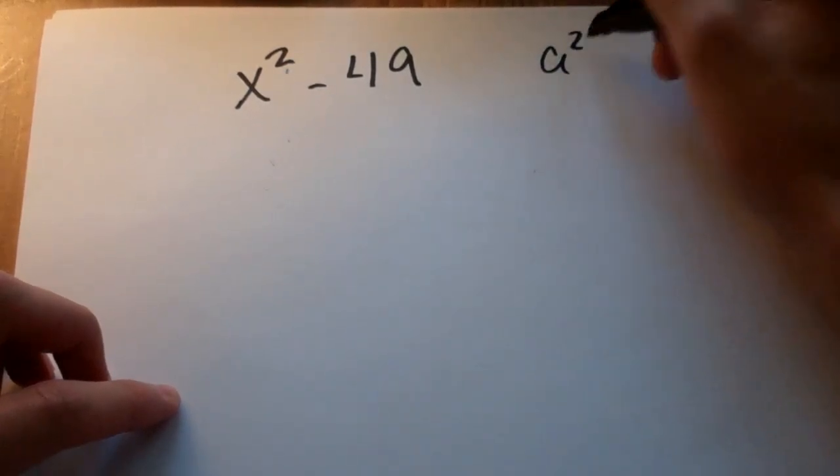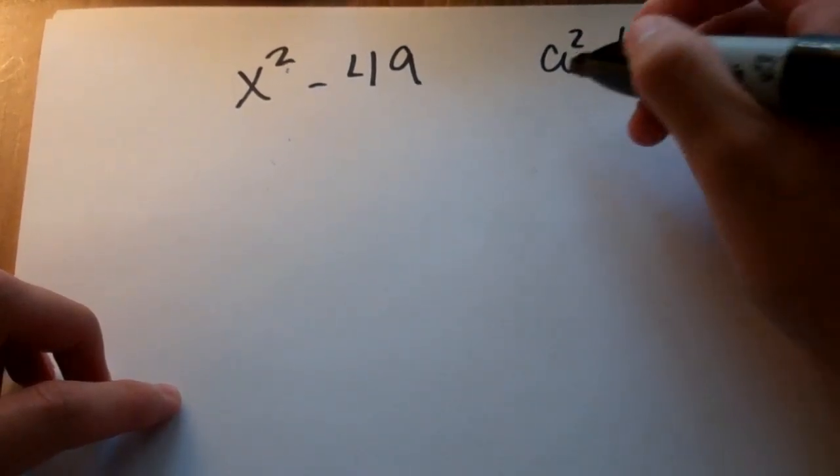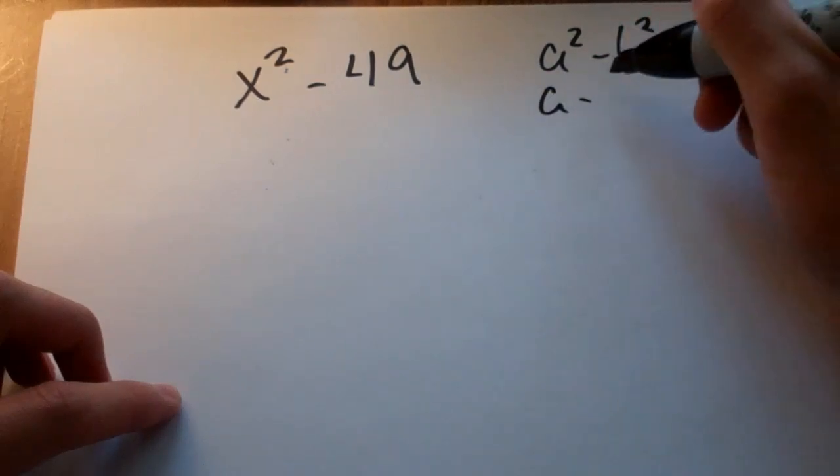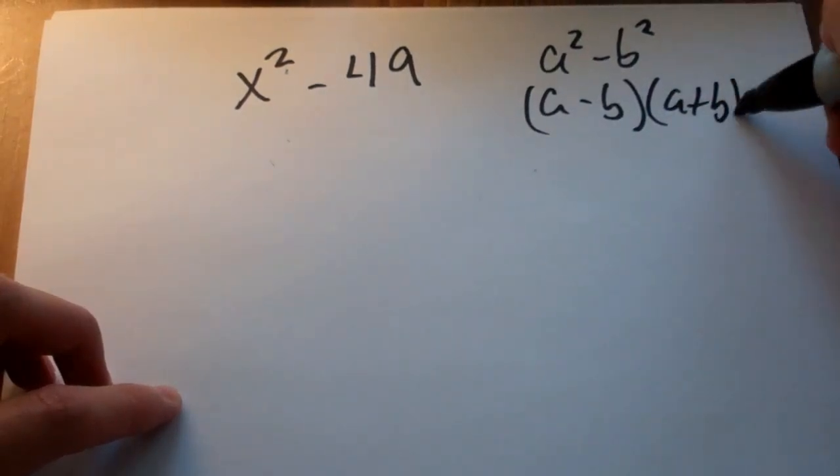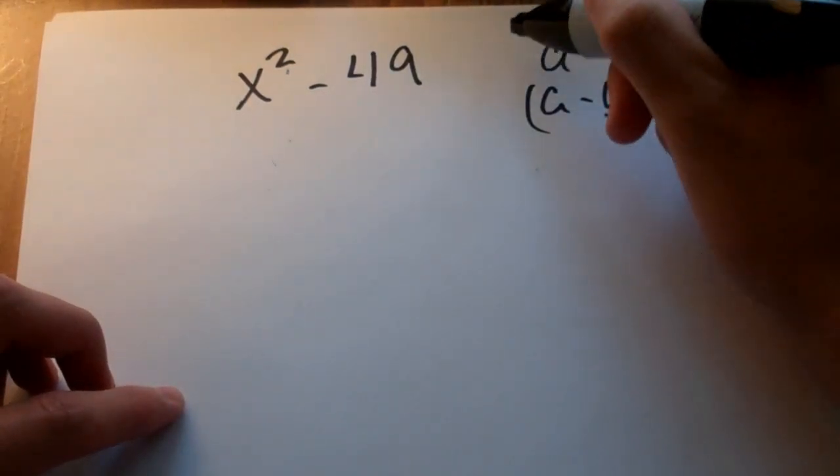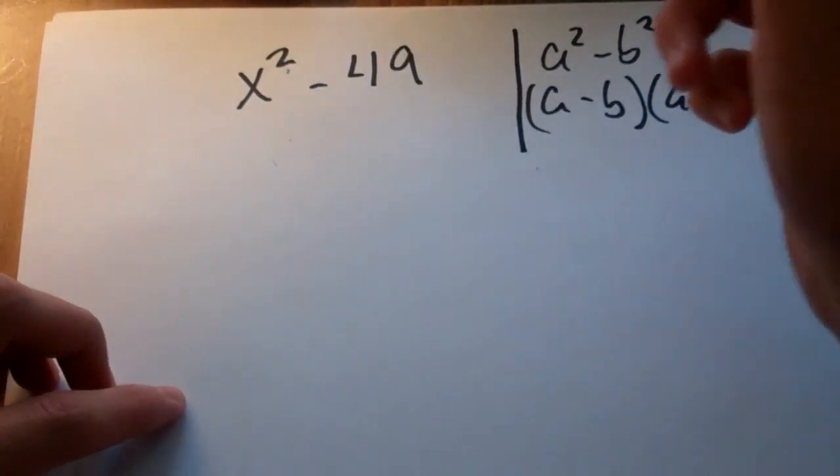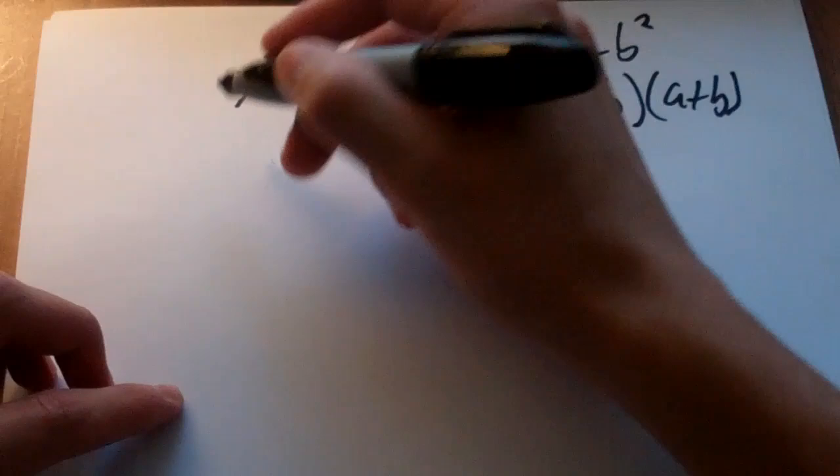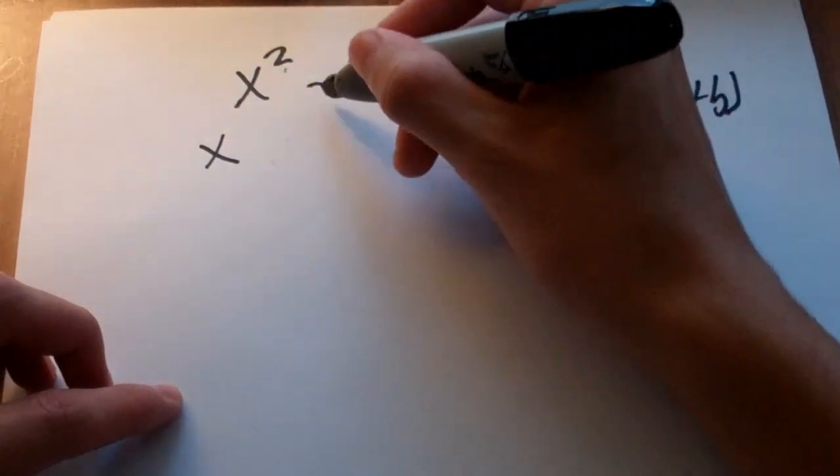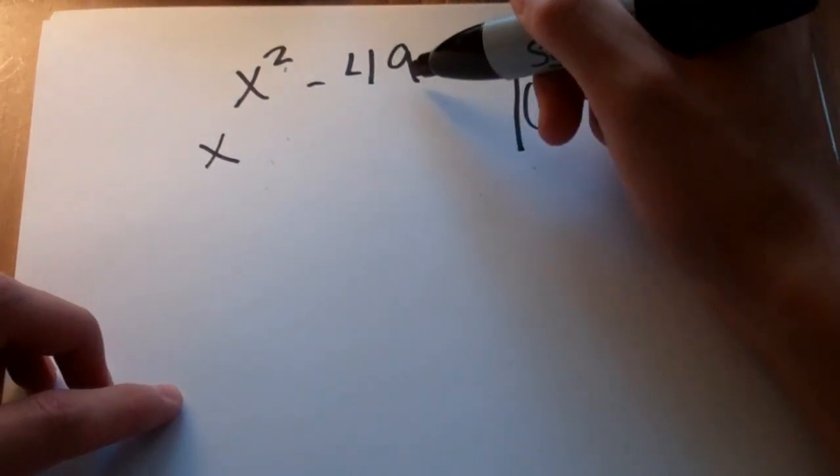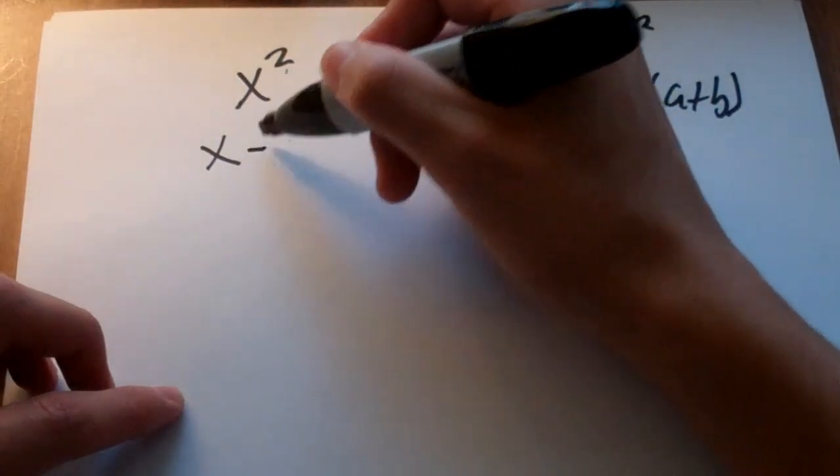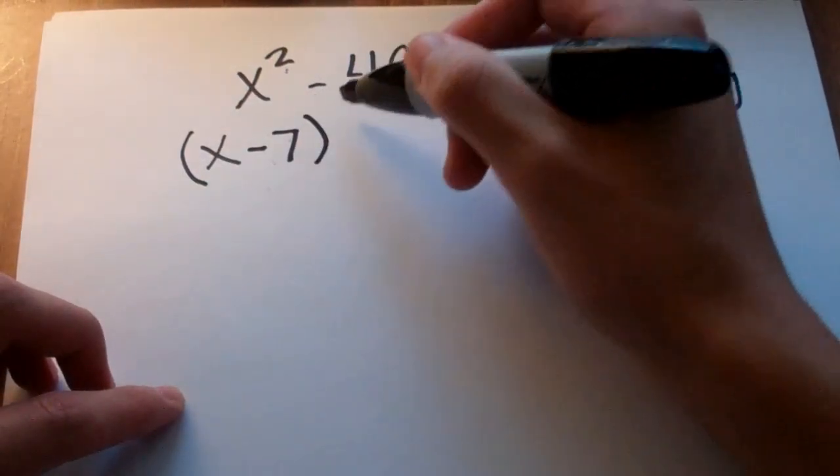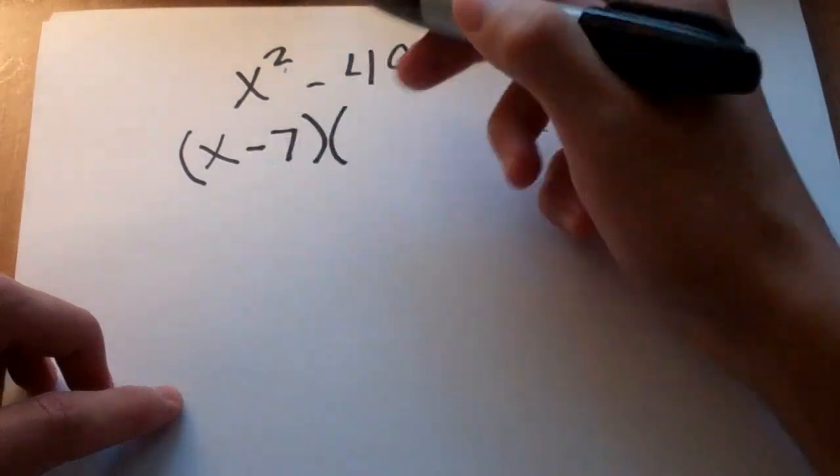So, remember, a squared minus b squared, we can write it as a minus b, a plus b. Well, if that's the case, if we apply this rule right here to this, then I can write, if this is a, x, and b, what squared will give you 49? Well, 7, right?